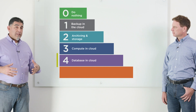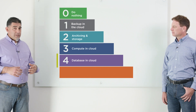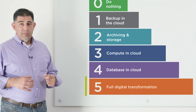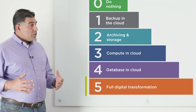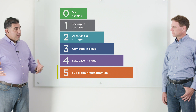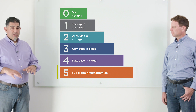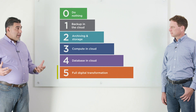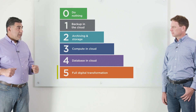Level four is when you first start to use the cloud native services and applications. And then finally, level five of the maturity model is when you're doing full digital transformation. You're going to refactor the entire application and use all cloud services and microservices to build this application from the ground up as a cloud native application.